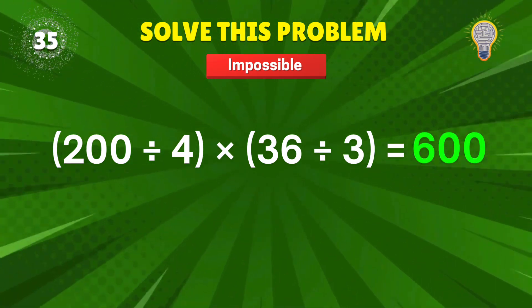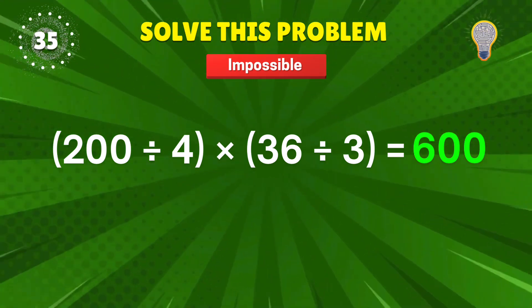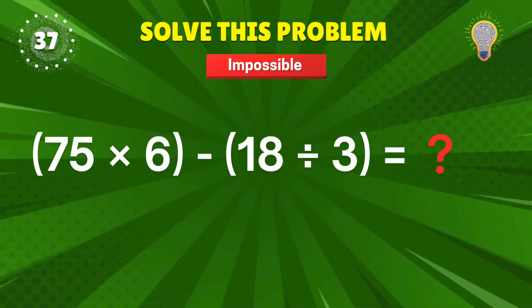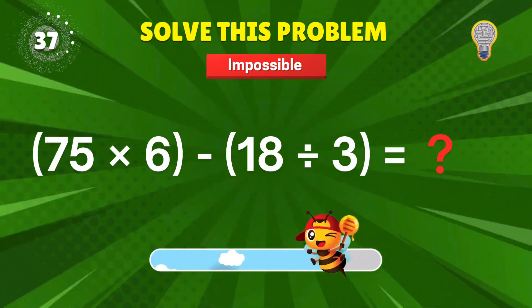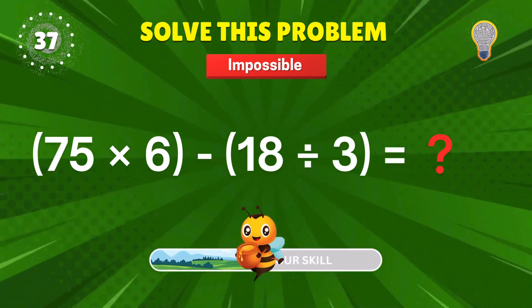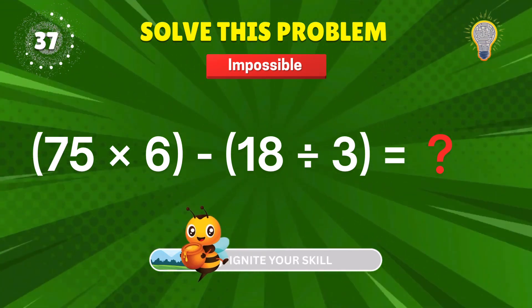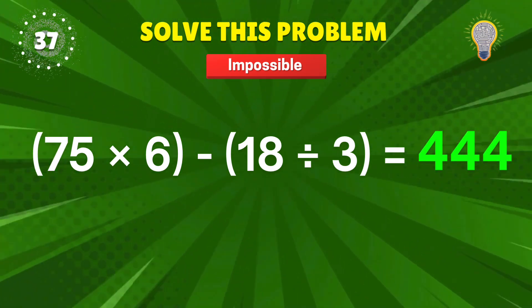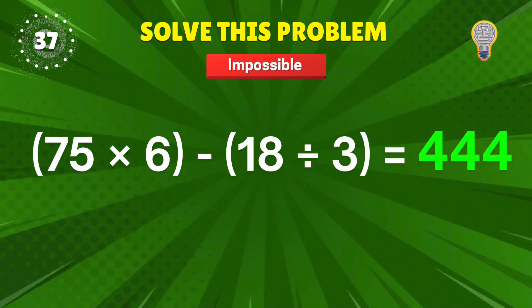600. Mega crunch. Plus 1 point. 75 times 6? 18 divided by 3? Danger zone. 444. Kaboom. You nailed the chaos. Plus 1.